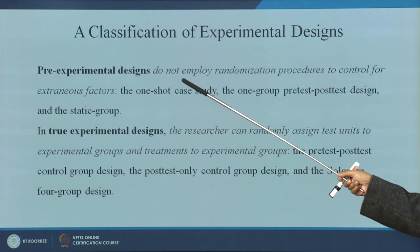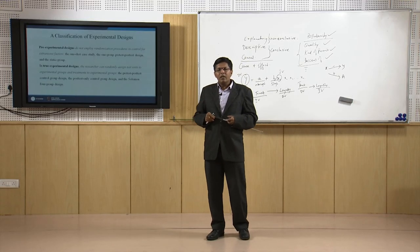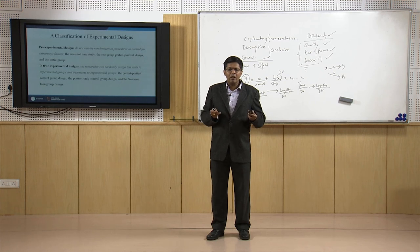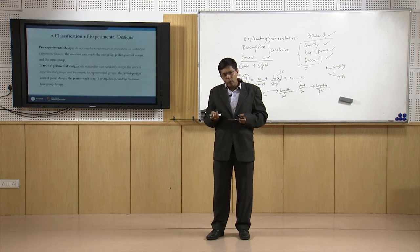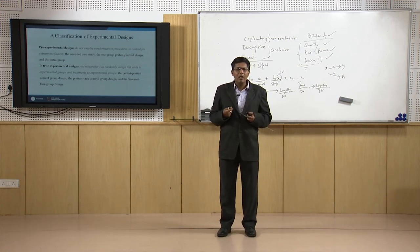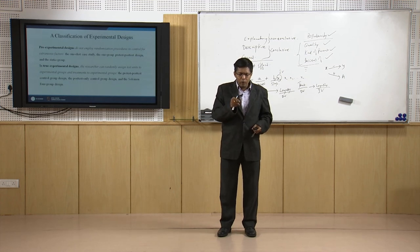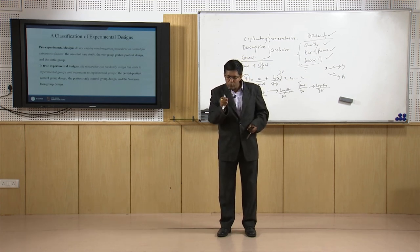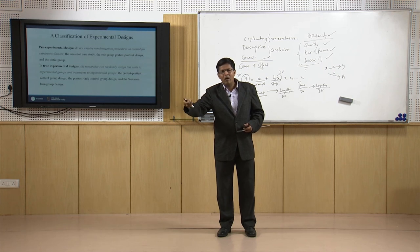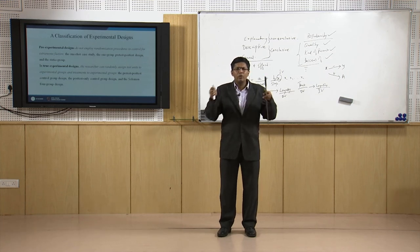Pre-experimental designs do not employ randomization procedures. Randomization is conducting a study on a random basis to reduce bias. If you do it on a judgmental basis, there could be bias — you might choose people you know would do well. To avoid any kind of bias, we use randomization.